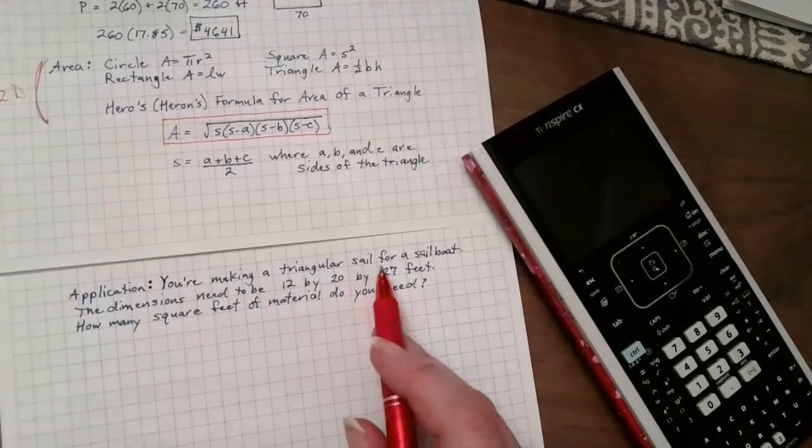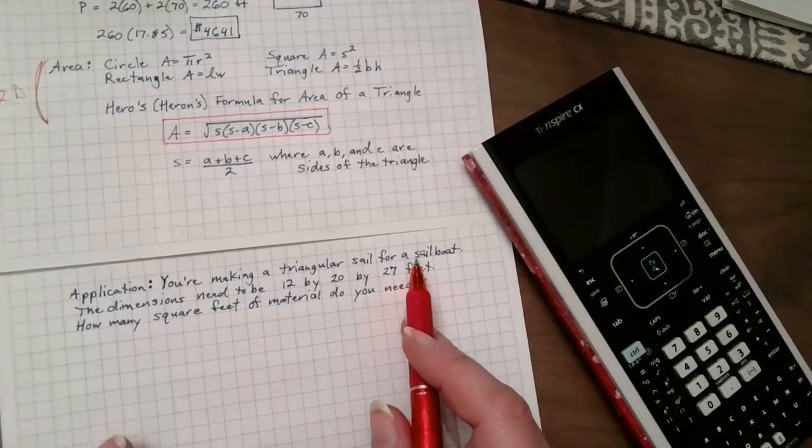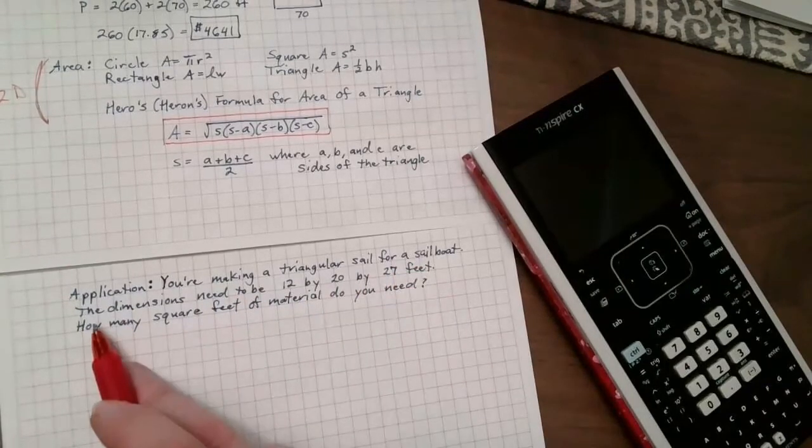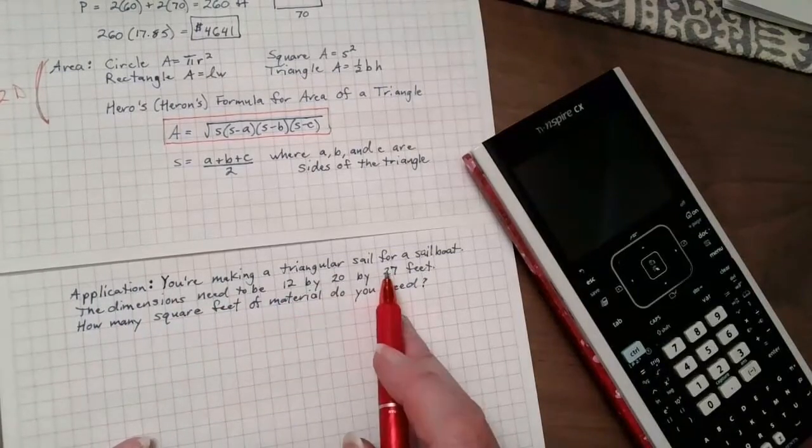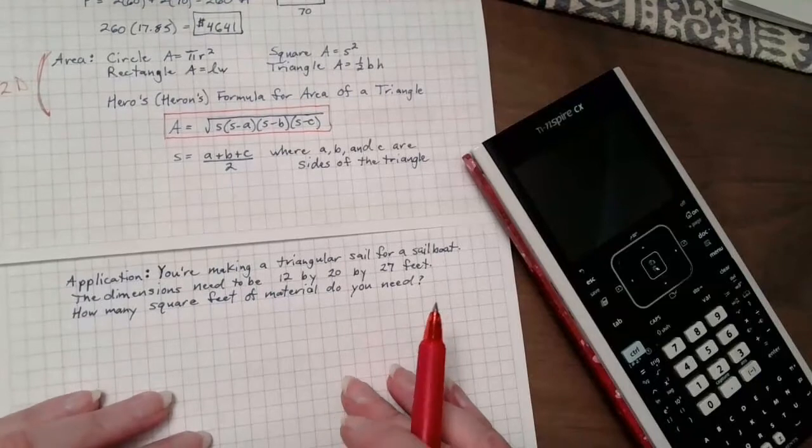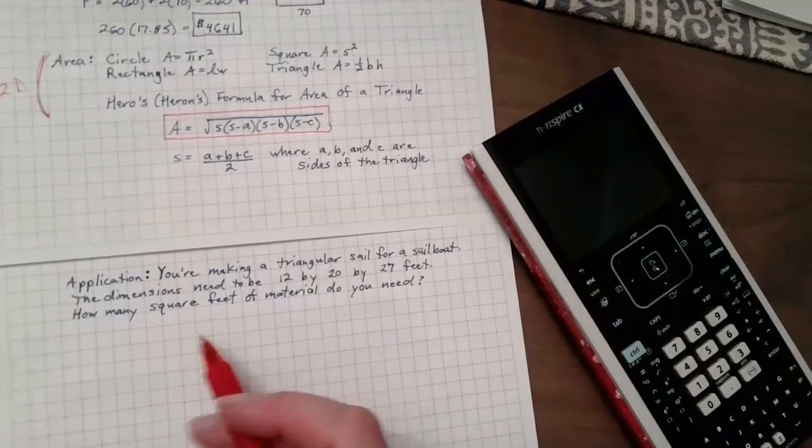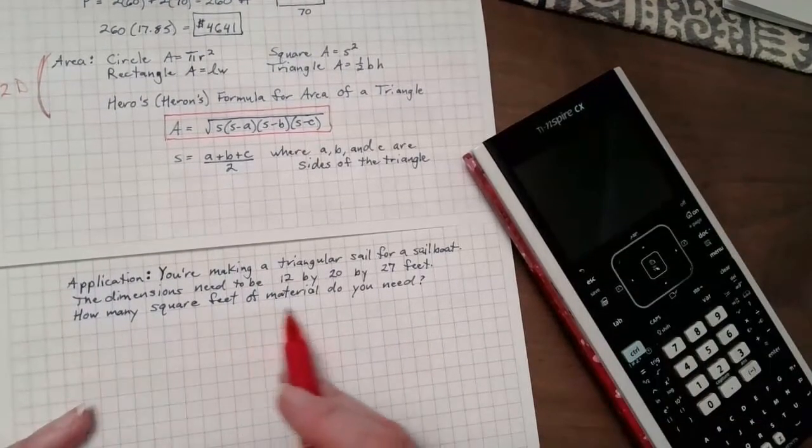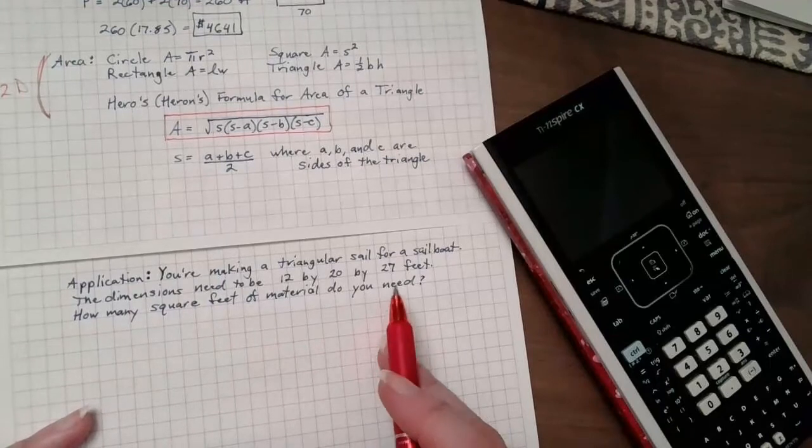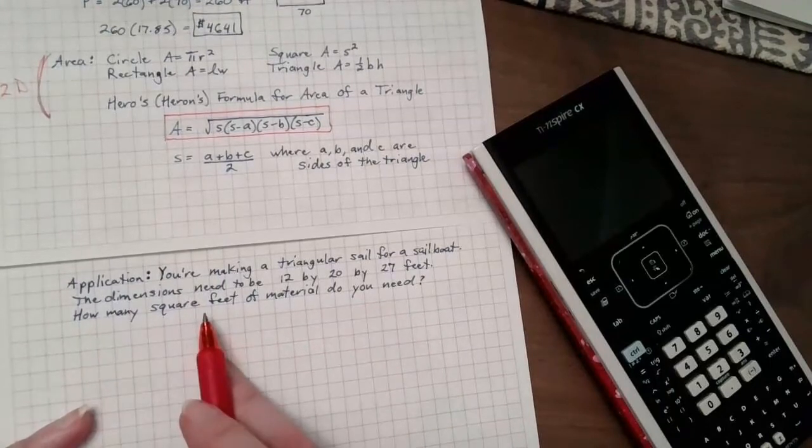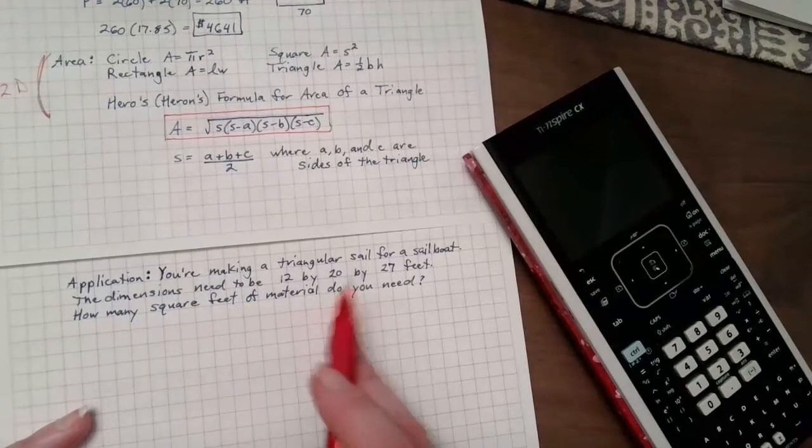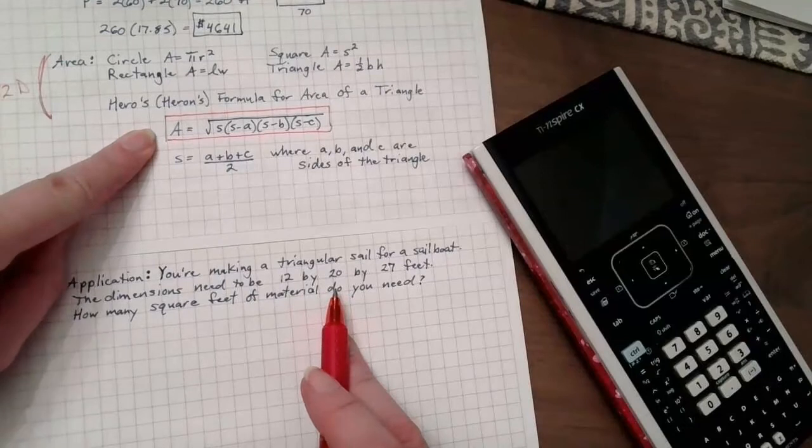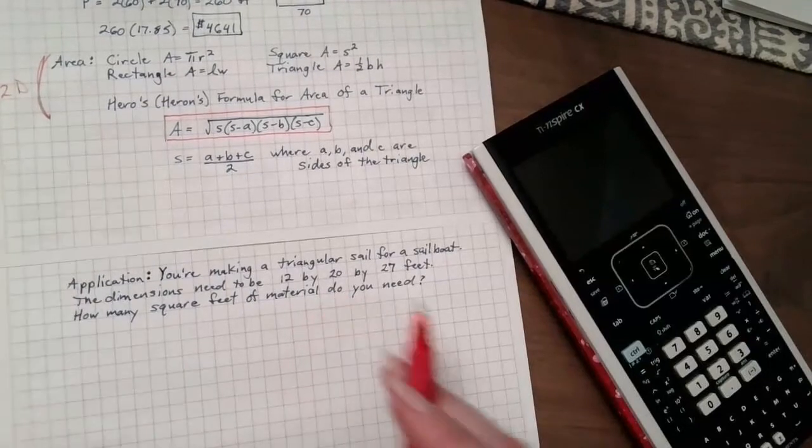So, application. You're making a triangular sail for a sailboat. I don't know. You could have a sailboat. I don't have one, but that's okay. The dimensions for the sail need to be 12 by 20 by 27 feet. Is this a right triangle? I don't know. Do I have the base and the height? Maybe. Probably not. How many square feet of material do you need? I need area. Square feet is area. Hands down. All the time. So, if I need to know how much material for the sail, I need the area of this, and since I have all three sides, this is a logical choice.